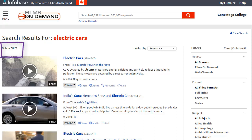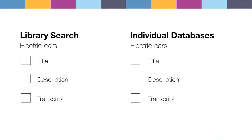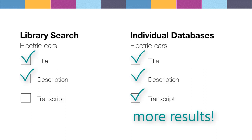This is because the library search only looks for your keywords in the video titles and description. But when you search within individual databases, your keywords are searched in the video titles and descriptions, as well as the video transcript, which is a written version of the words spoken in the video. You are likely to find many more results when you search the content inside the video.